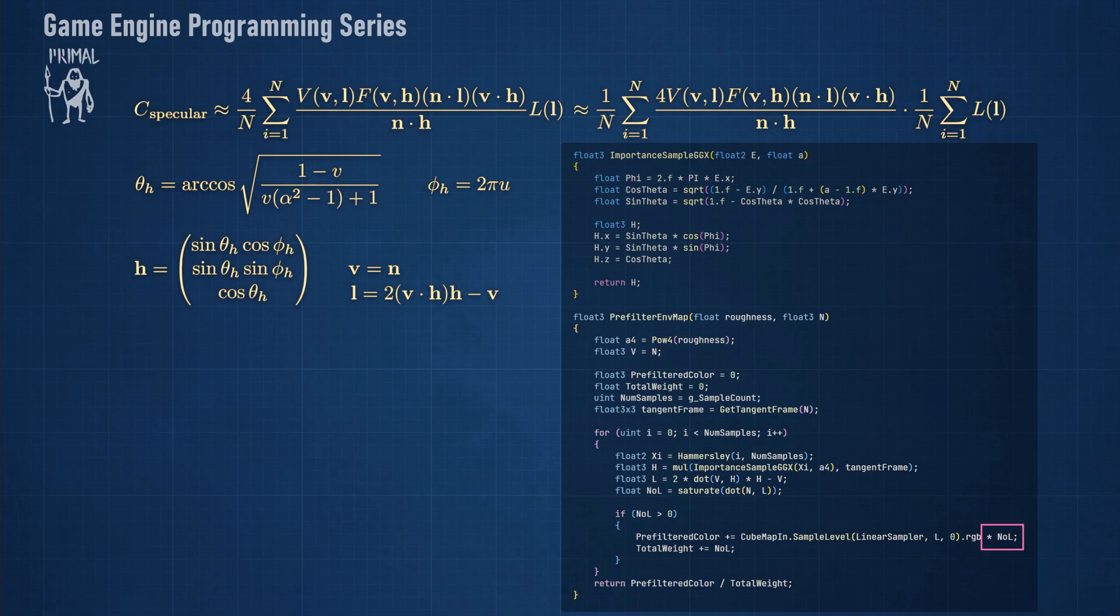Also note that we are multiplying each sample by n dot l. Furthermore, instead of dividing the result by the number of samples, we divide by the sum of all dot products. So effectively, we are evaluating this expression instead of the one we derived using our beautiful mathematics.